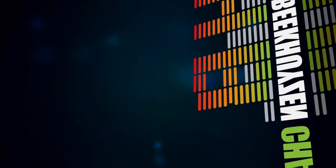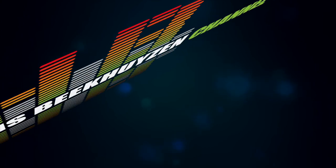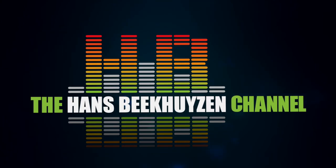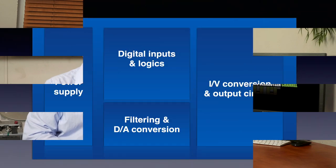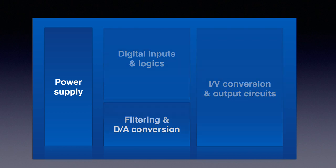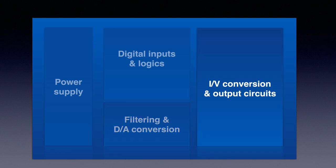What's inside the digital to analog converter and what defines the quality? This video gives you some insight into DACs, since more understanding might lead to better buying decisions. Every digital to analog converter — DAC for short — is built from a number of building blocks: the power supply, the input circuitry, the D2A converter, and the analog output circuit with current to voltage conversion. They all have their influence on the sound quality and on the price. I will discuss them one by one.